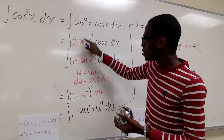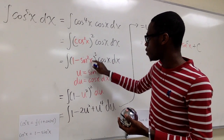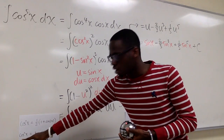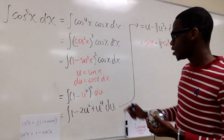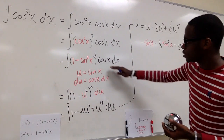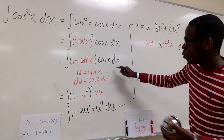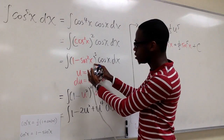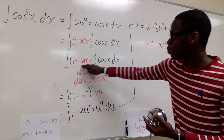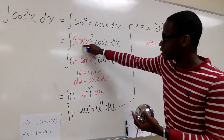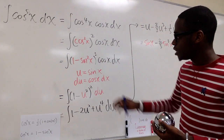We want to rewrite cosine squared x as 1 minus sine squared x, all squared — which is a trig identity shown right below. The strategy here is: since we have cosine x dx, we want what's in the parentheses to be an expression in terms of sine x. That is why we had to rewrite it this way, so we could perform a u-substitution.